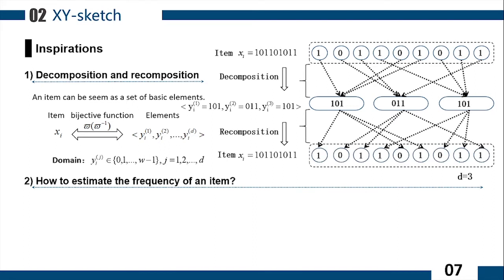Due to the bijective function, these basic elements can be uniquely decomposed as the original item. It means that these three basic elements can uniquely represent the original item.